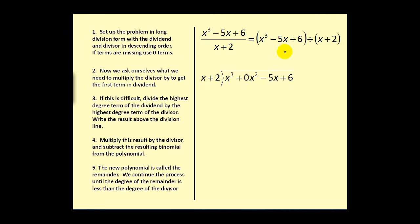Now a division problem involving polynomials can take a variety of forms. Whichever form it's written in, we do have to write it in long division form, with the dividend and divisor in descending order. If terms are missing, we use zero terms. What that means is, since this polynomial is missing the degree 2 term, we have to include a 0x squared.